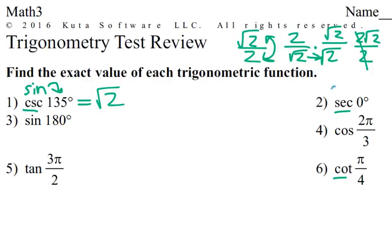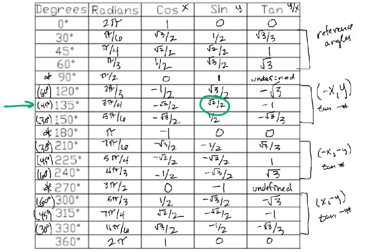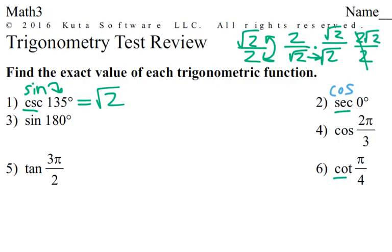Number 2: secant is the reciprocal of cosine. At 0 degrees, cosine is 1. So secant is 1 over 1, which is just 1.